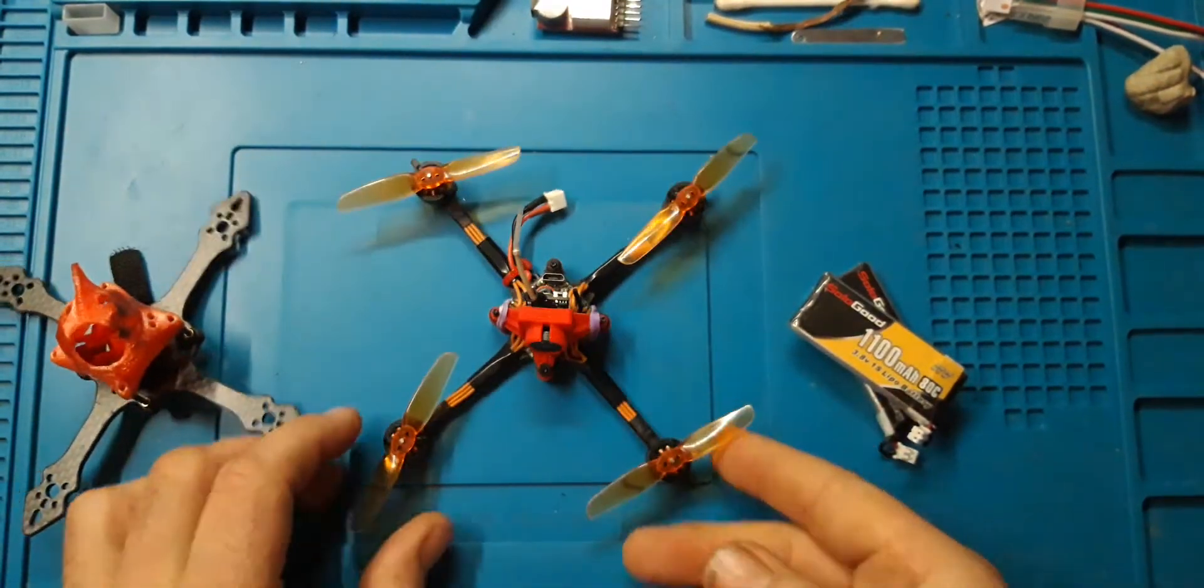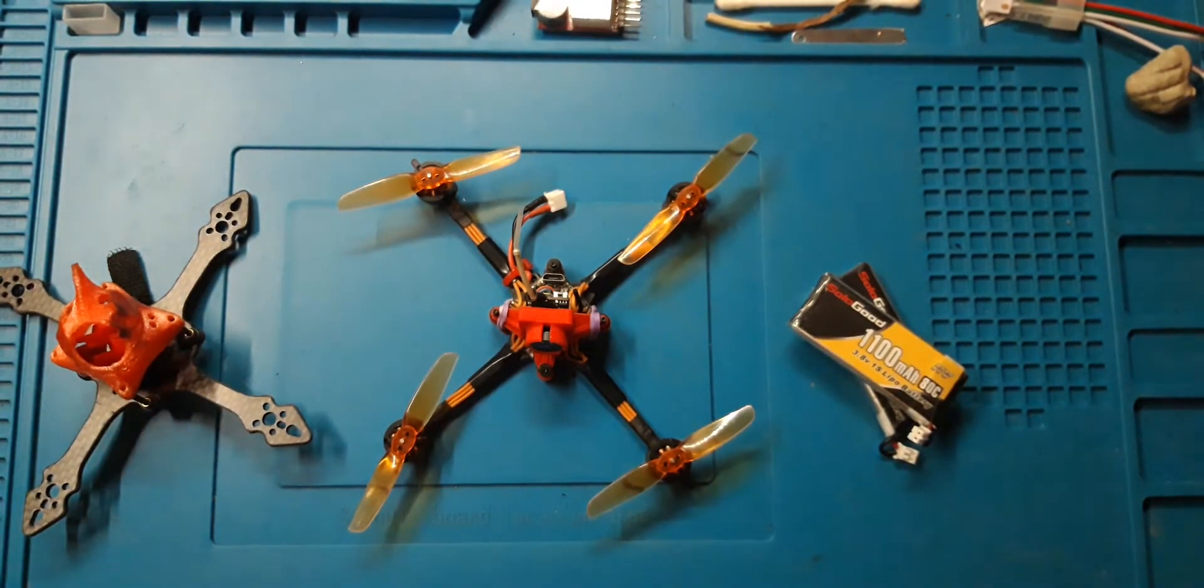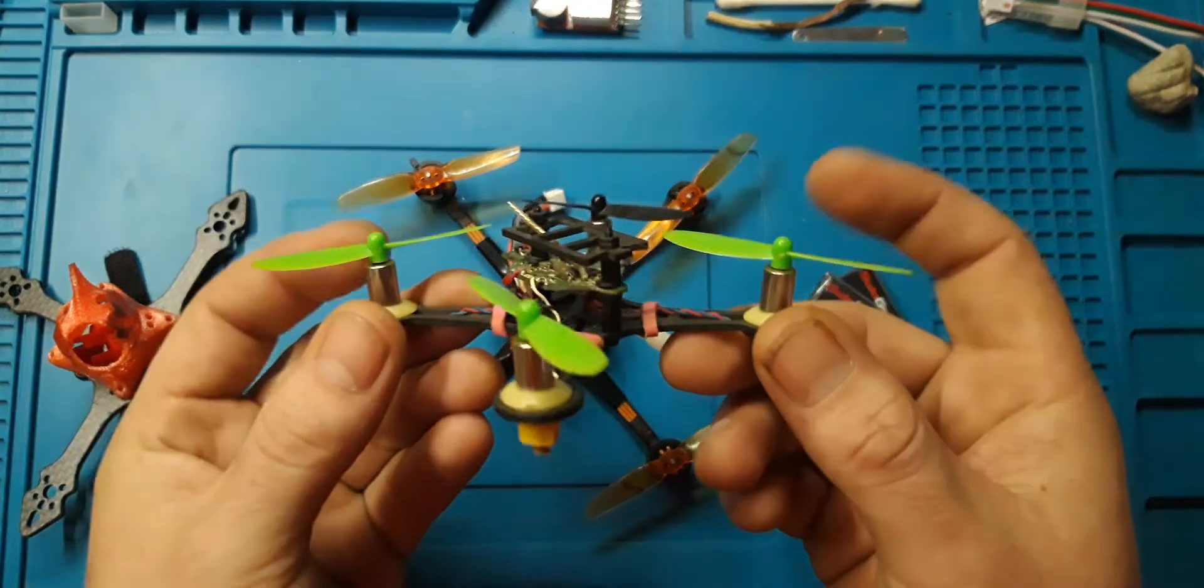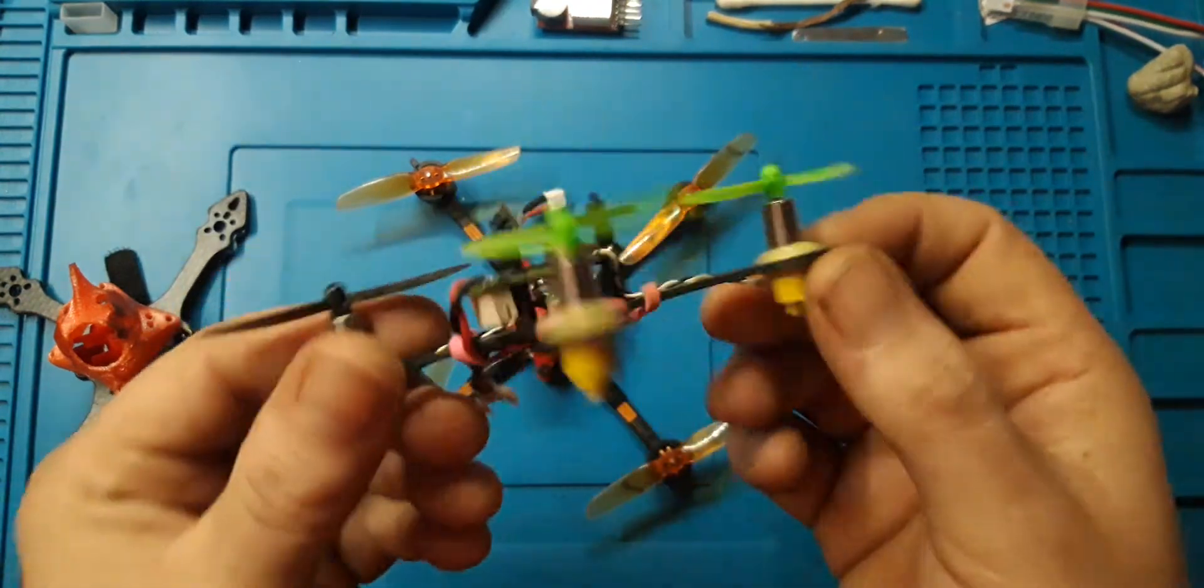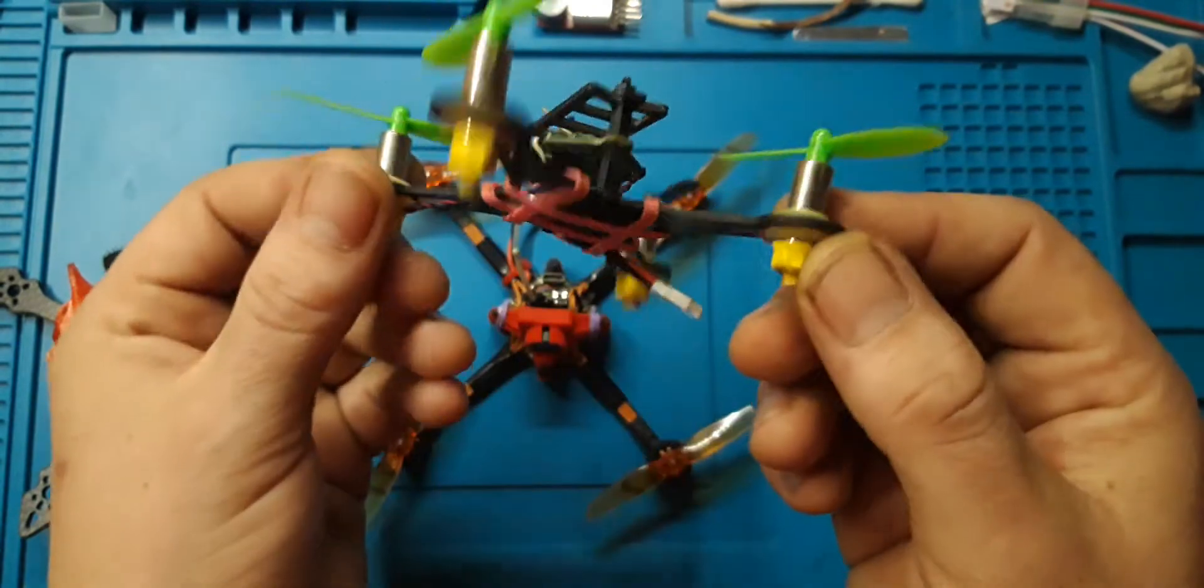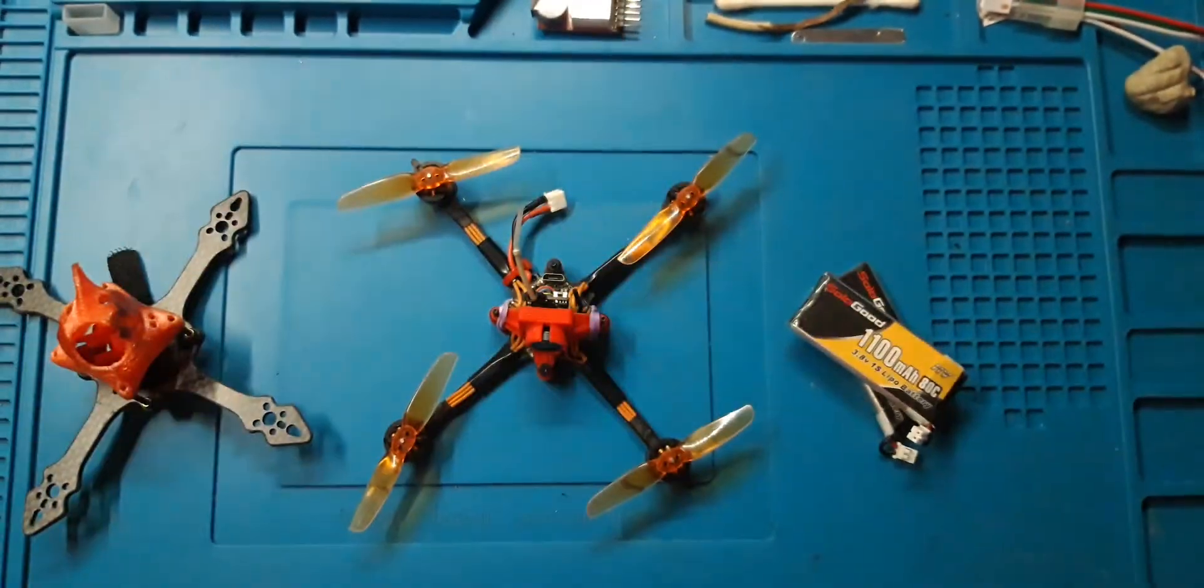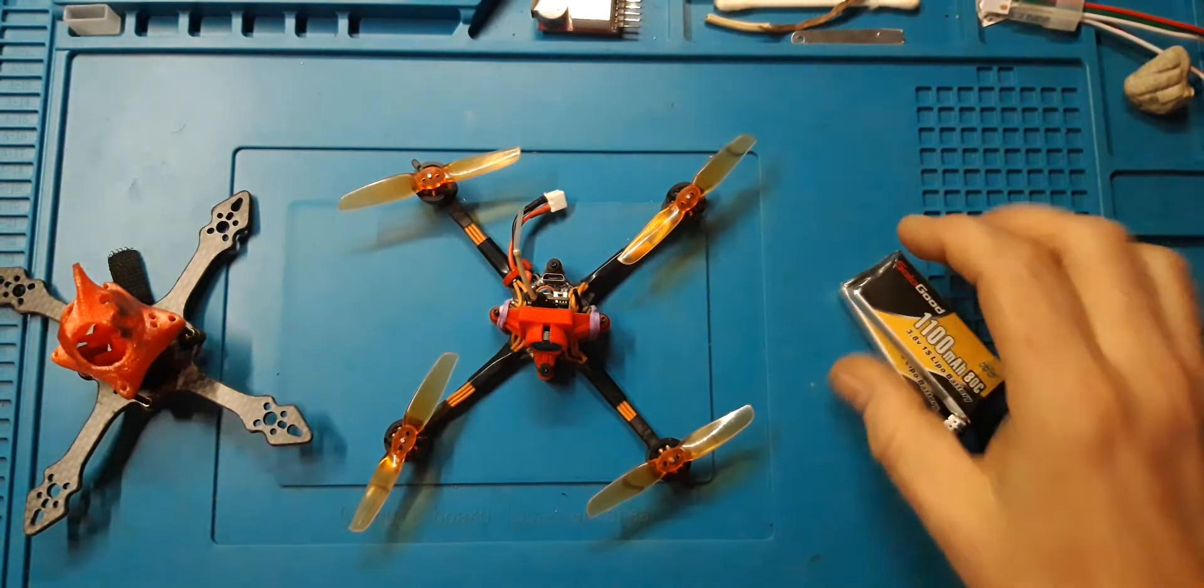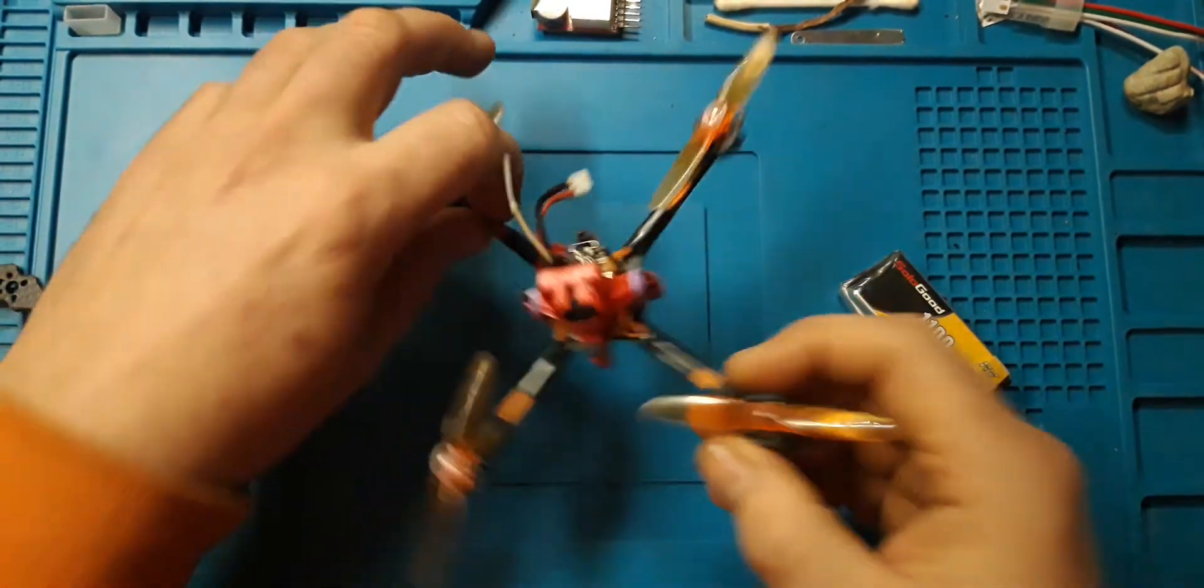I used to have these when we were running brushed quads. I actually have one here and this is a little 1s with brushed motors. This is just a transition of an old toy thing onto a frame. It's very nice, still flies very well, but it can't do acro and it can't do all the modern stuff that we want to do.